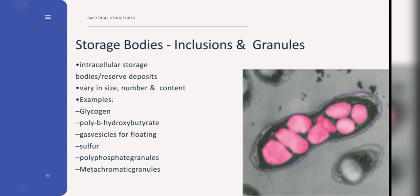Next, we have the storage granules. They are an important component of metabolism in many organisms spanning the bacterial, eukaryotic, and archaeal domains. These granules are the parts of the cell that store the cell's energy reserves, as well as other important metabolites. Examples of storage bodies are glycogen, poly-beta-hydroxybutyrate, gas vesicles for floating, sulfur, polyphosphate granules, and metachromatic granules.